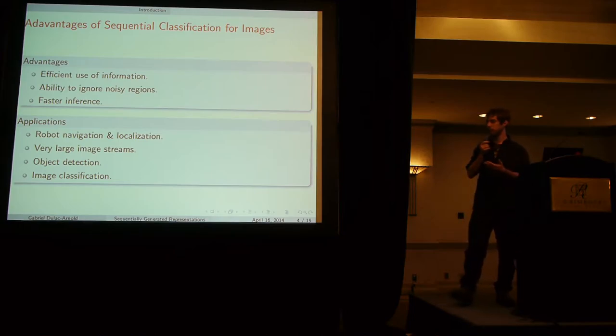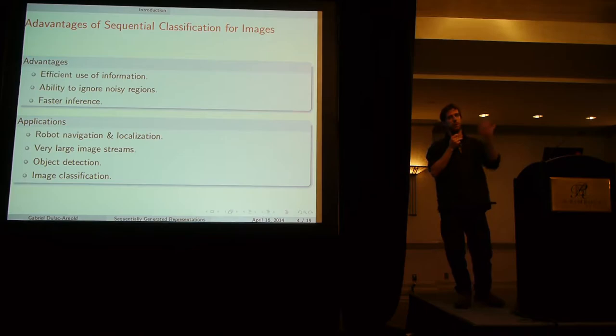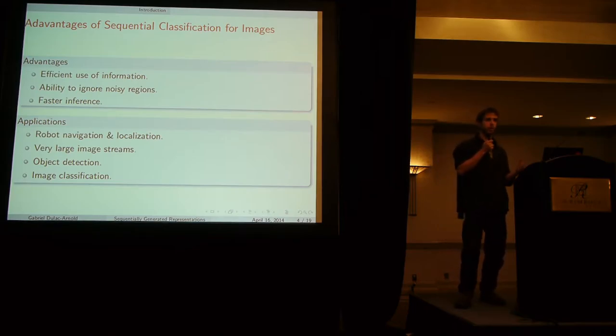And then finally the task we do here is just a more naive image classification task where if you have a bunch of regions in your image and you want to be able to classify without using all the regions of the image, then you can classify a lot quicker and more efficiently using this kind of model.